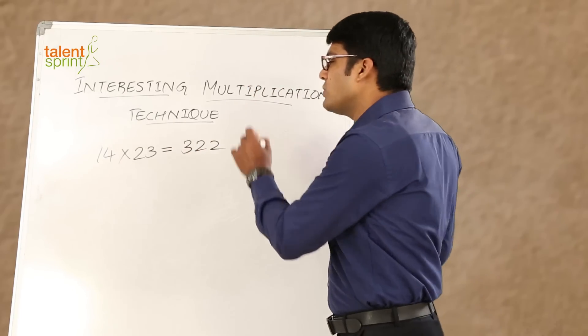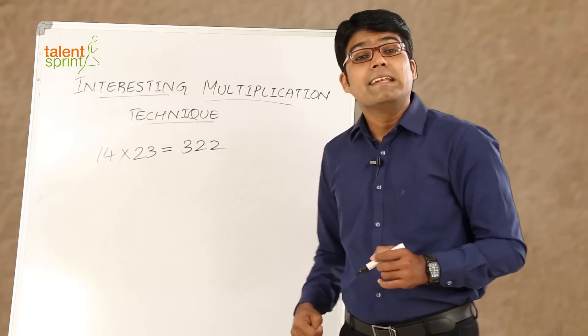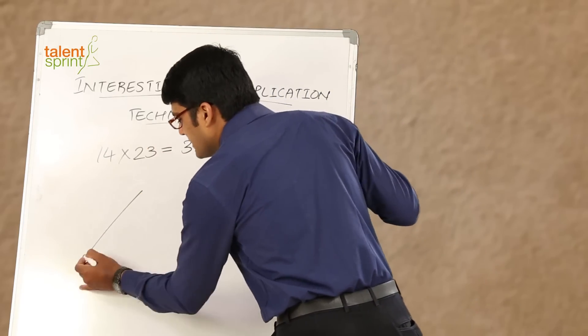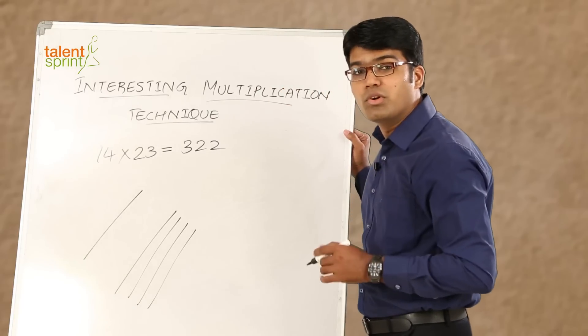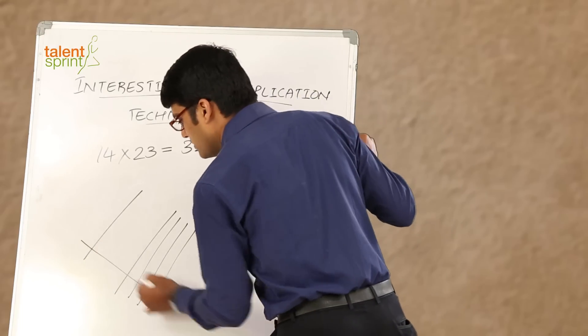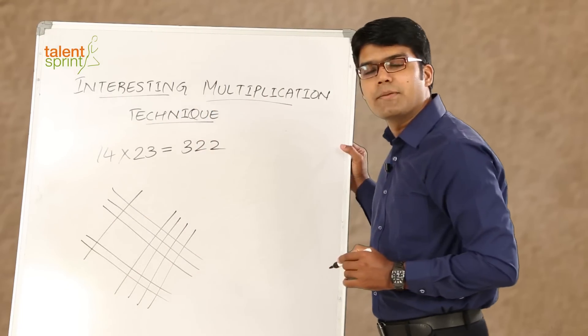But then we will find out the answer without the conventional or the smart method that we know. We will use this interesting multiplication technique. So let us put the number 14 here. How do we do that? This is 1 and 1, 2, 3, 4. So that is the number 14. Now let us put the number 23 intersecting with this set of lines. So here we have got 2 and then 3. 2, 3 becomes 23.